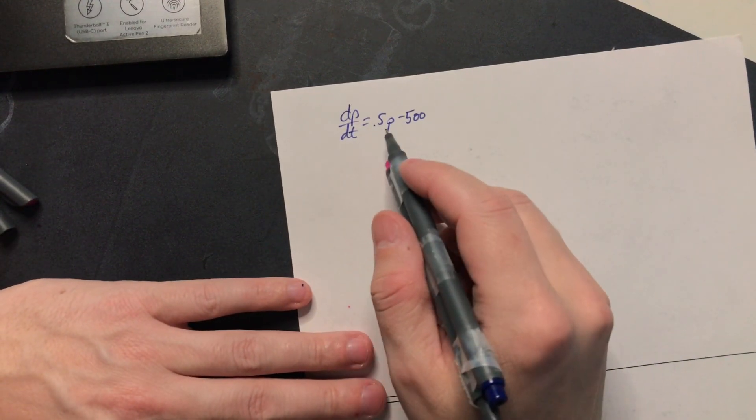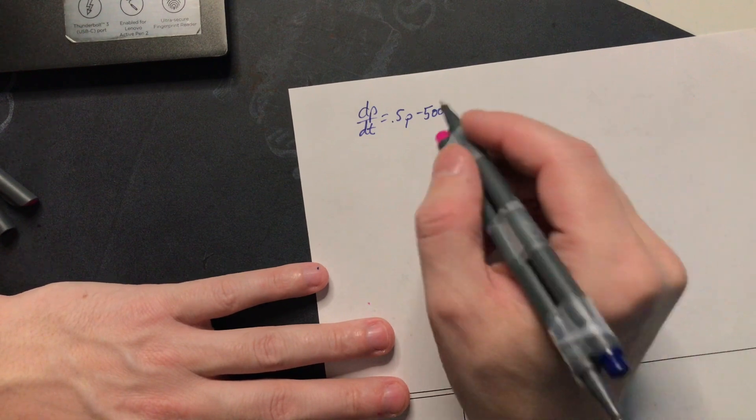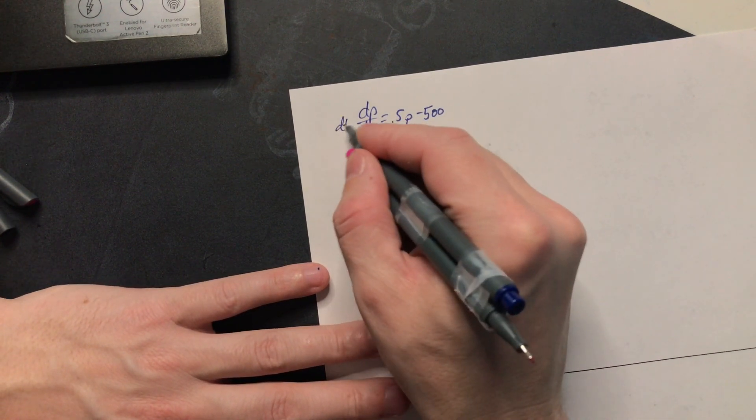I solved this equation dp over dt equals 0.5p minus 500. So first just multiply both sides by dt.